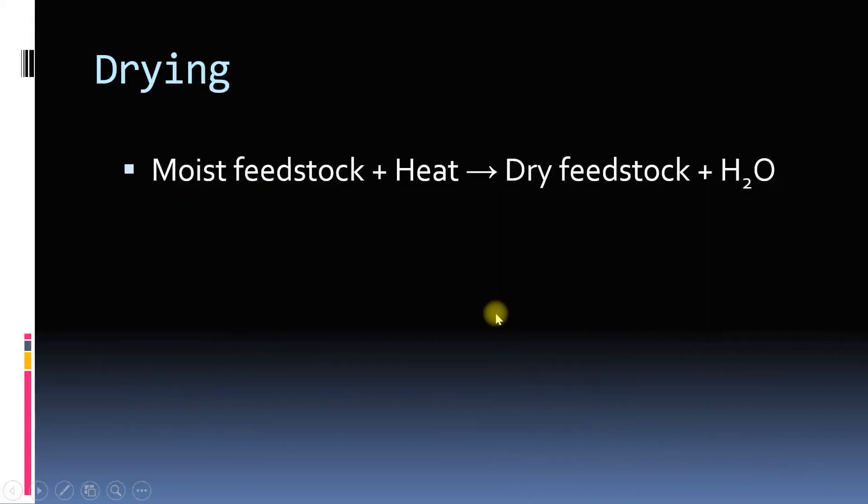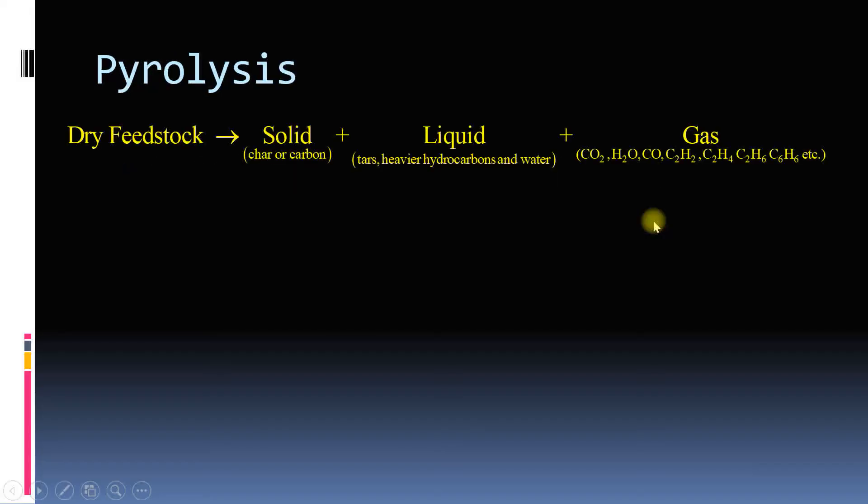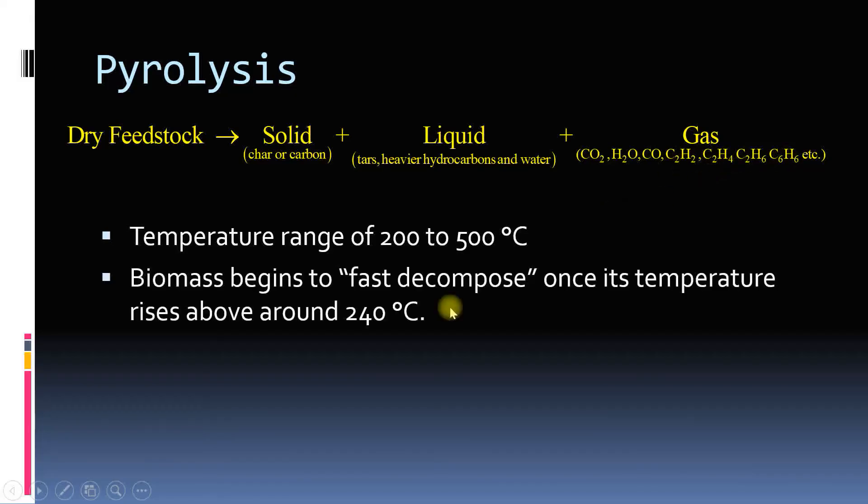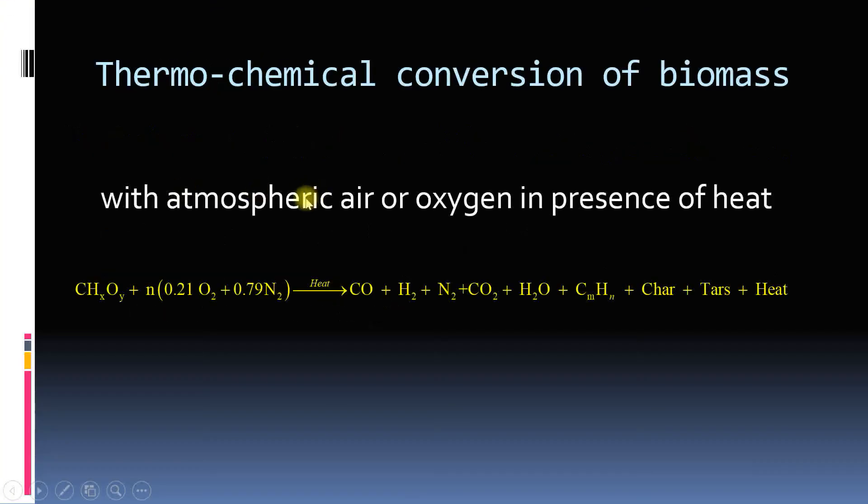In drying zone, the feedstock which may be moist will be heated and dried. In pyrolysis, dry feedstock is converted to solid, liquid and gaseous phase. Temperature ranges 200 to 500 degrees centigrade. Various tars, heavier hydrocarbons, water, and various gases like carbon dioxide, water vapors, carbon monoxide and hydrocarbons may be there. Biomass decomposes faster above 200 degrees centigrade.